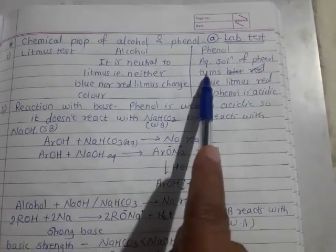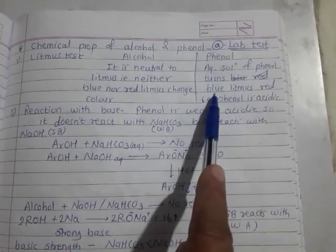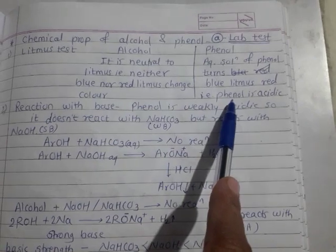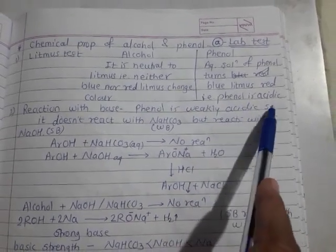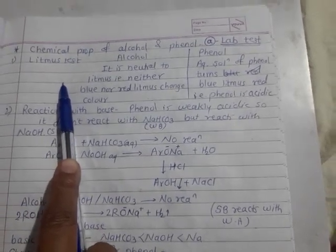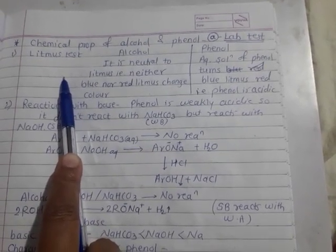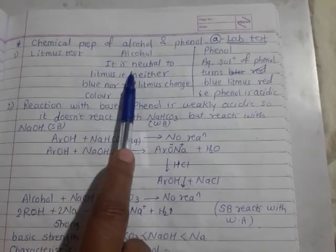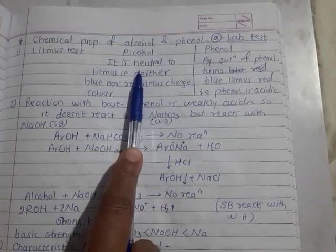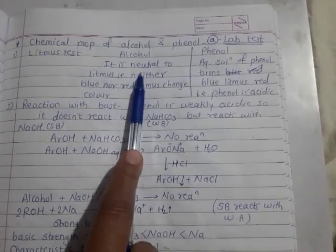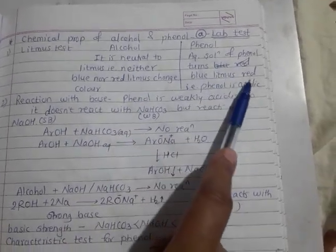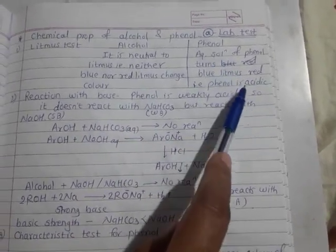Blue litmus turns red only in acidic medium, which confirms that phenol is acidic. If there is no change in the color of the litmus paper, that substance is alcohol. If blue litmus turns red, that substance is phenol.